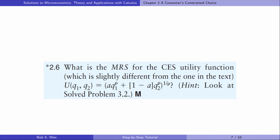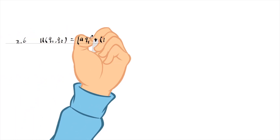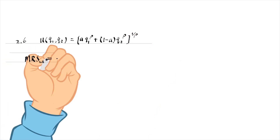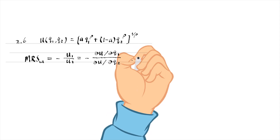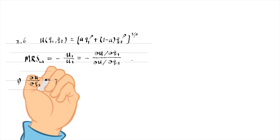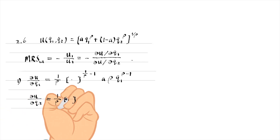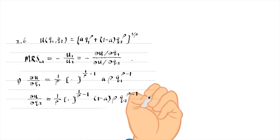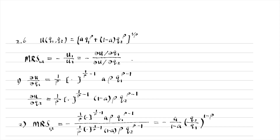Let's do exercise 2.6. What is the marginal rate of substitution for the following CES utility function? We write down the formula for the marginal rate of substitution MRS between good one and good two — it is the negative of the ratio of the marginal utilities. In the first step, we write the expressions for the marginal utility of good one and the marginal utility of good two. In the second step, we express the marginal rate of substitution in terms of the marginal utilities.